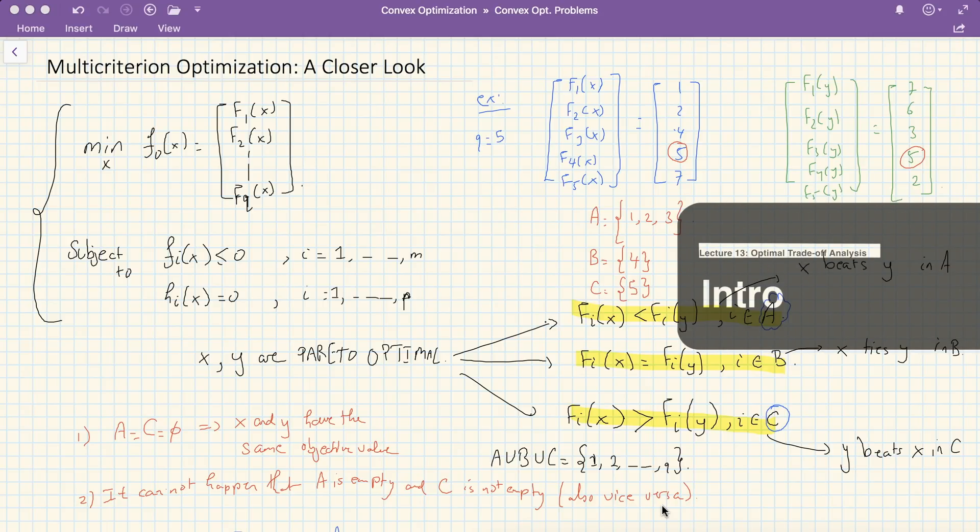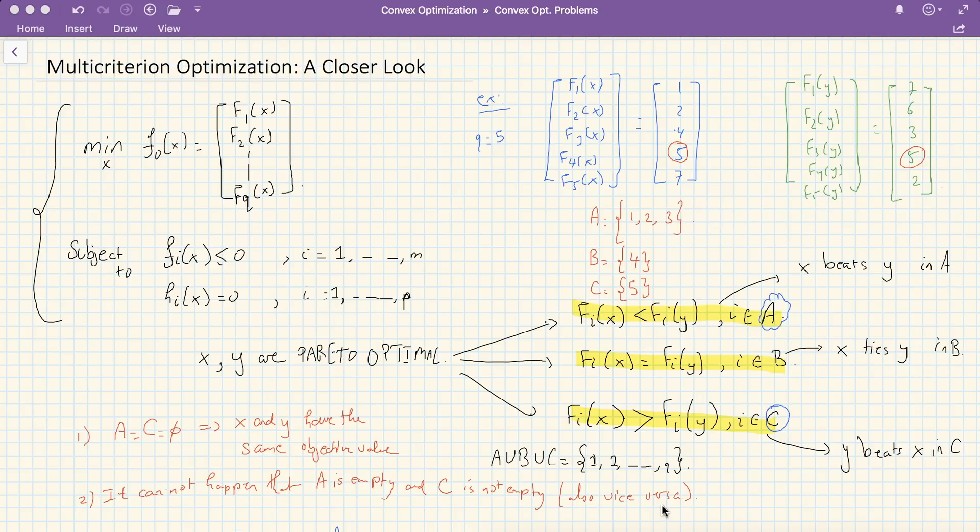Hello and welcome to this lecture on multi-criterion optimization where we'll be exploring more topics closely. We'll first start off with a reminder on what multi-criterion optimization is and in particular what the Pareto optimal frontier is. Then we'll talk about the optimal trade-off analysis that we didn't tap on in the previous lecture.